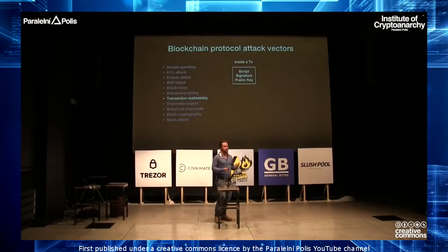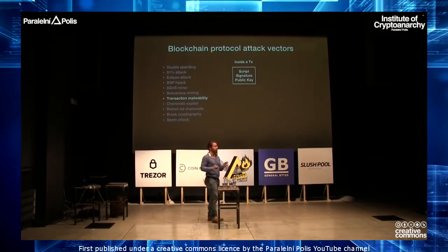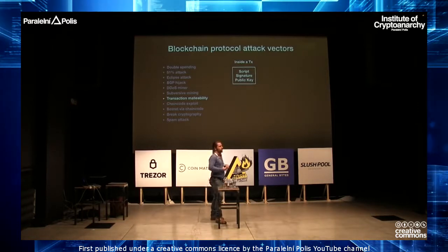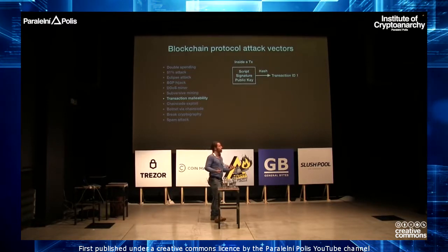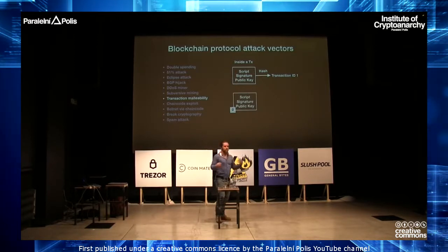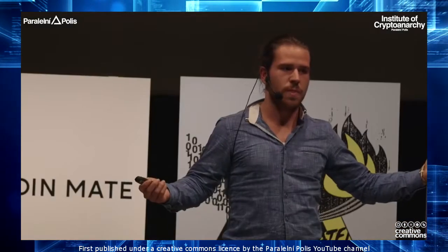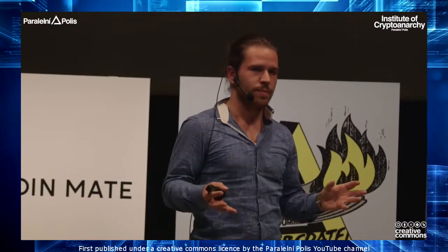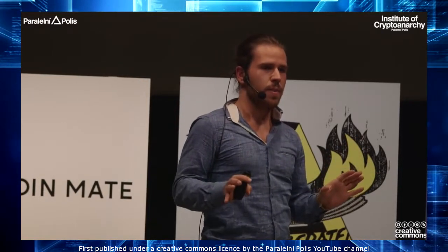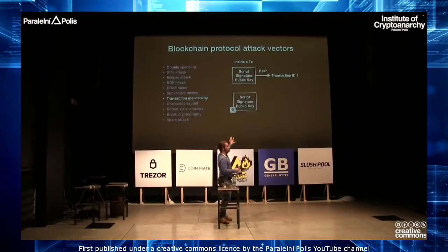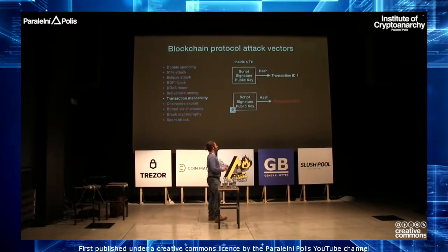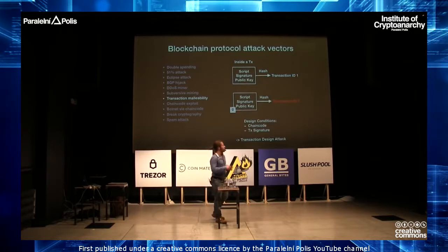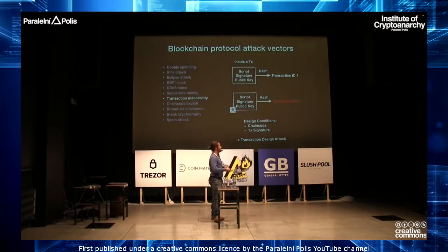The next example would be transaction malleability. Briefly explained: inside a transaction there is something called the script, a signature, and a public key, and this all gets hashed to produce a transaction ID. This transaction gets published to everybody in the network. Every node has the transaction and can take it and modify it in a way that it's still valid, but since it's modified a little bit, the hash value changes. This is transaction malleability. The design conditions for this attack: you need chain code in your blockchain and you need a transaction signature. I would call this a transaction design attack.